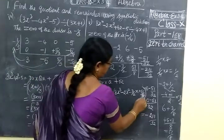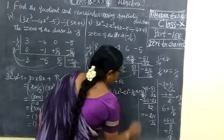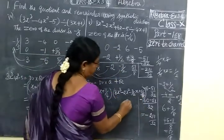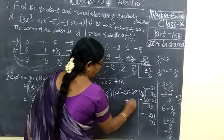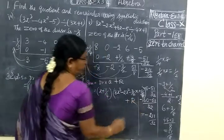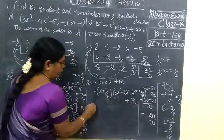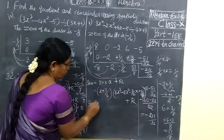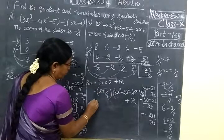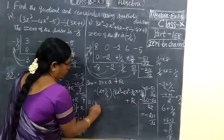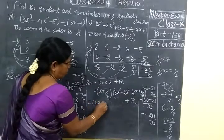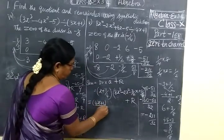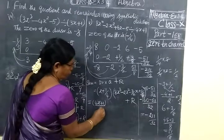Then it is the full complete division. The polynomial is x power 4. So x cubed minus 2x squared minus 3 by 2 x plus 51 by 8.